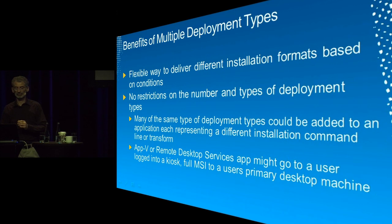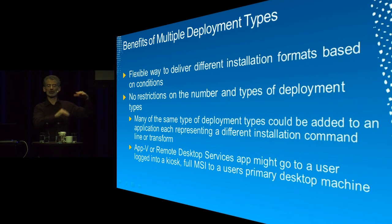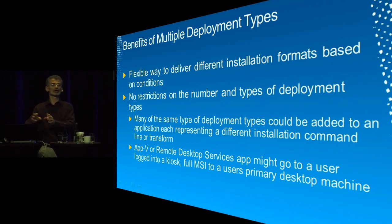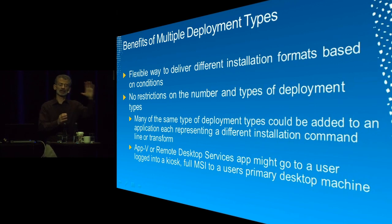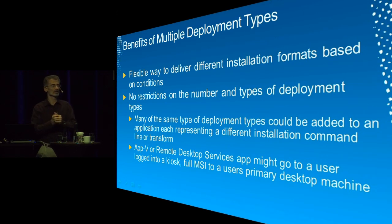The benefit of multiple deployment types is the ease of administration. Think about how you do things today — you have a package with different programs and have to determine which program to advertise to which users or collection. With the application model and multiple deployment types, you don't have to think about that. You create the app, create the deployment types, put in the appropriate requirement rules, say deploy, and the client figures out which deployment type is appropriate — MSI, App-V, Windows Mobile, script-based — based on your requirement rules.